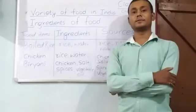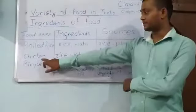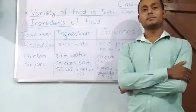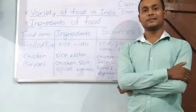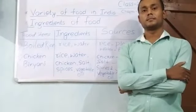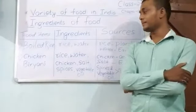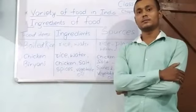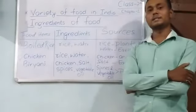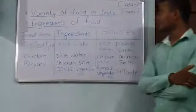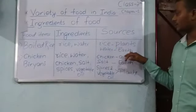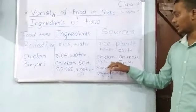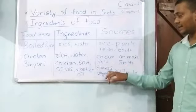Let us see another food item, which is chicken biryani. The ingredients of chicken biryani are rice, water, chicken, salt, spices, and vegetable oils. Rice comes from plants, water comes from the earth, chicken comes from animals, salt comes from the earth, and spices and vegetables also come from plants.